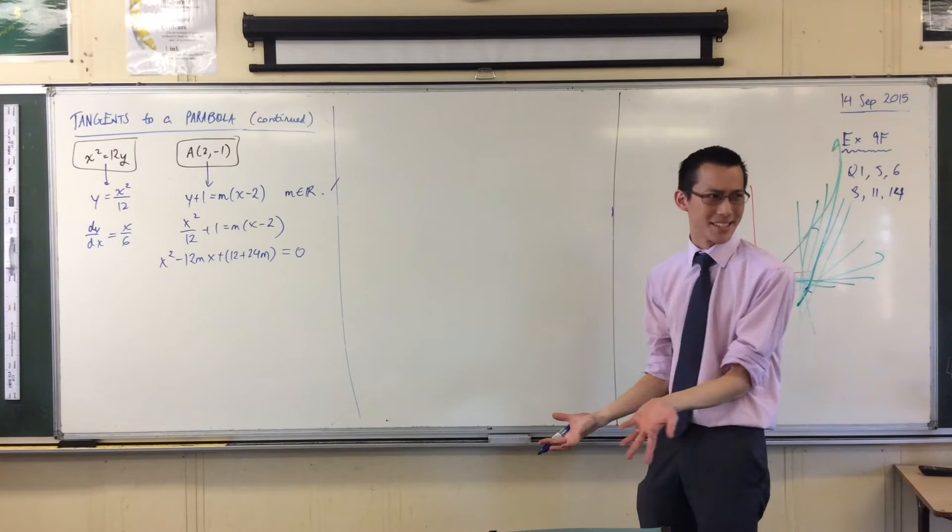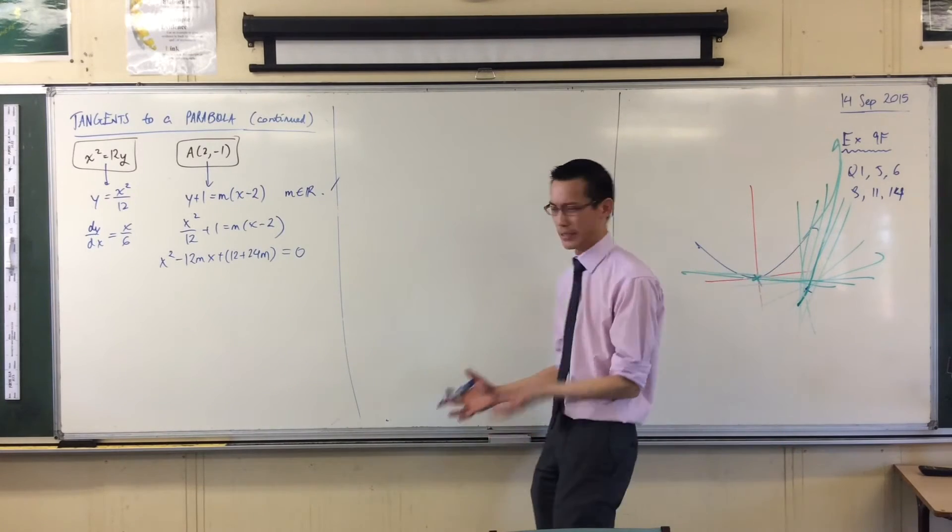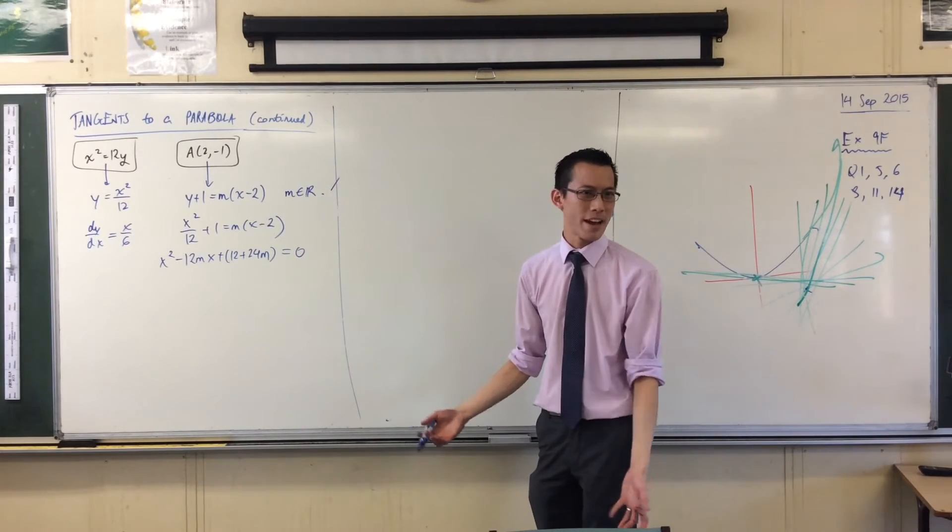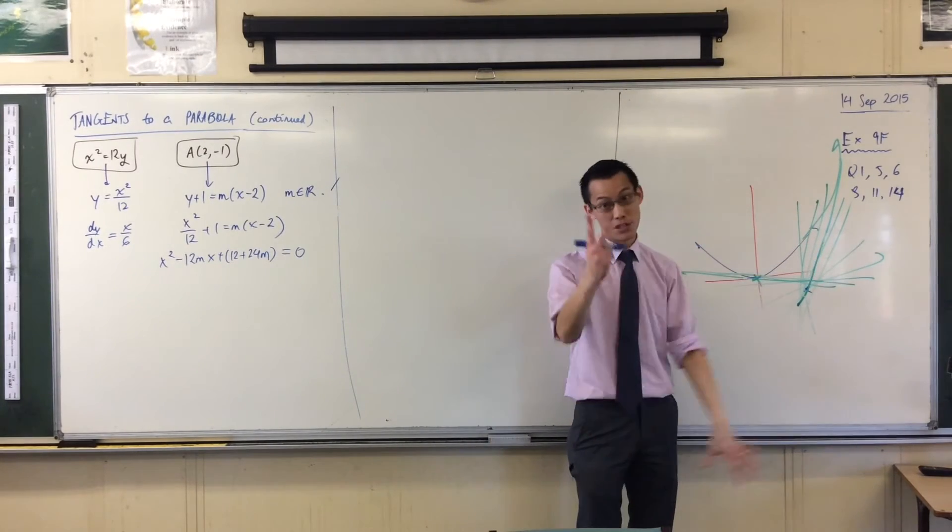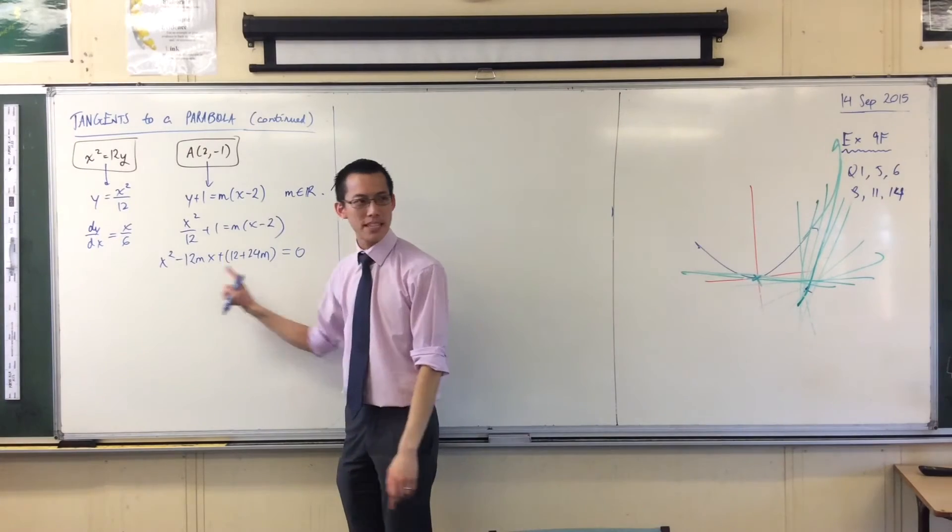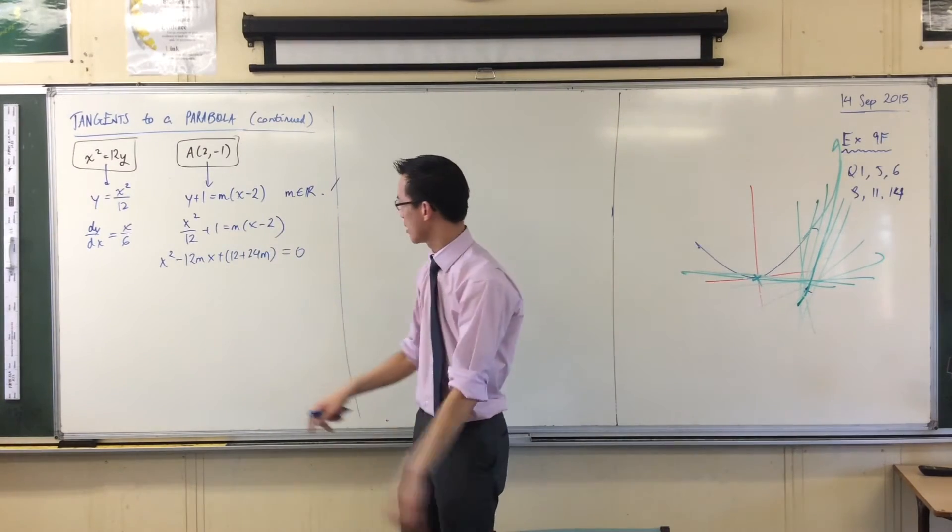Now, what do I do with this thing? I have this equation, but what am I going to do with it, right? Well, remember, I'm looking for a value of M. Well, I'm looking for two, actually. That are going to do something particular for this parabola, right?